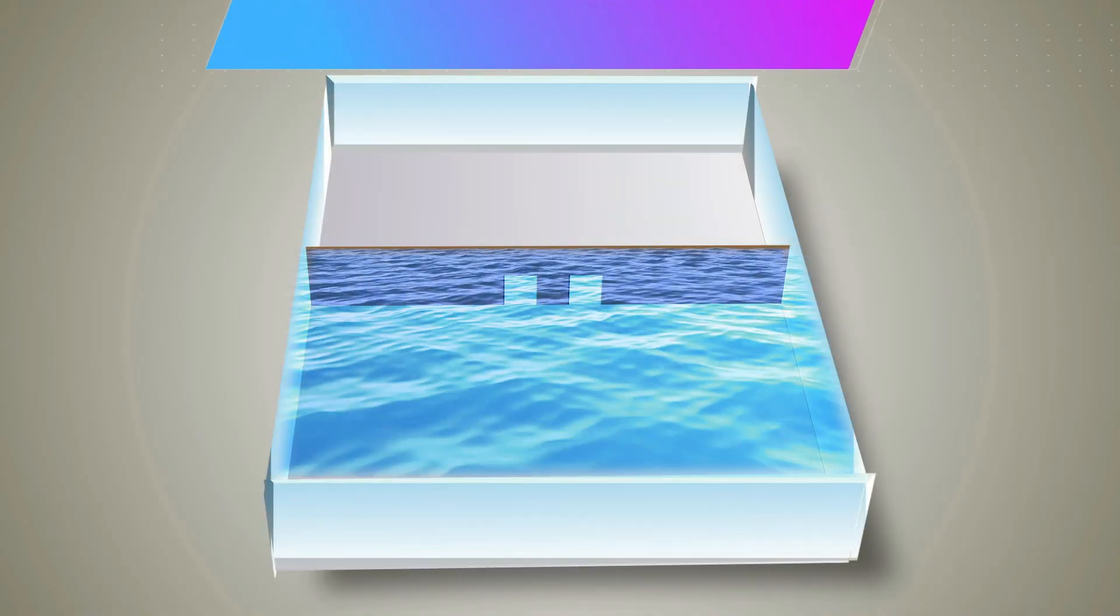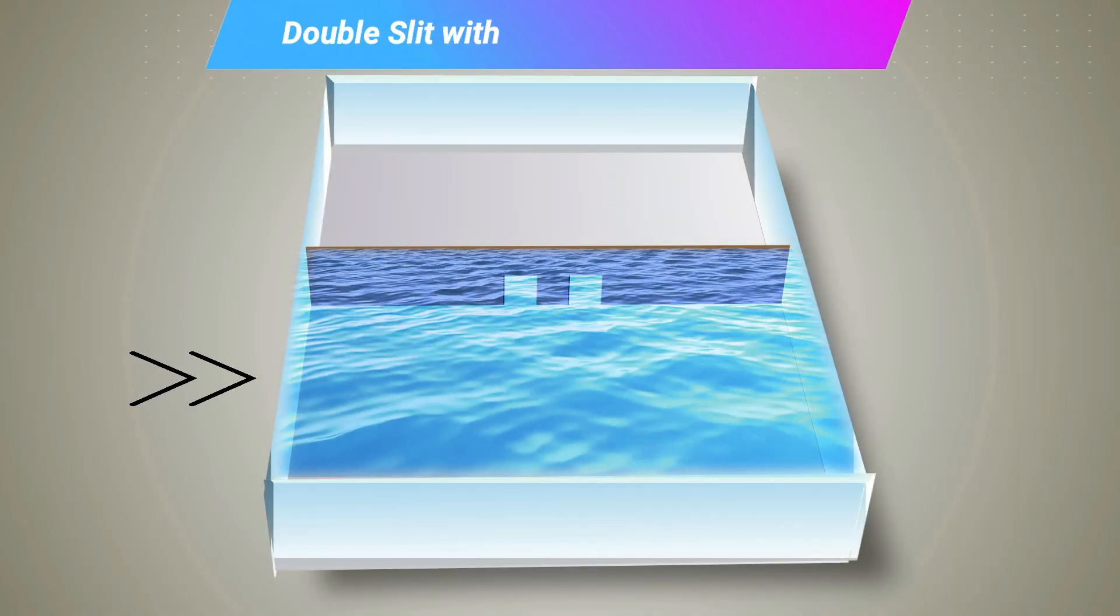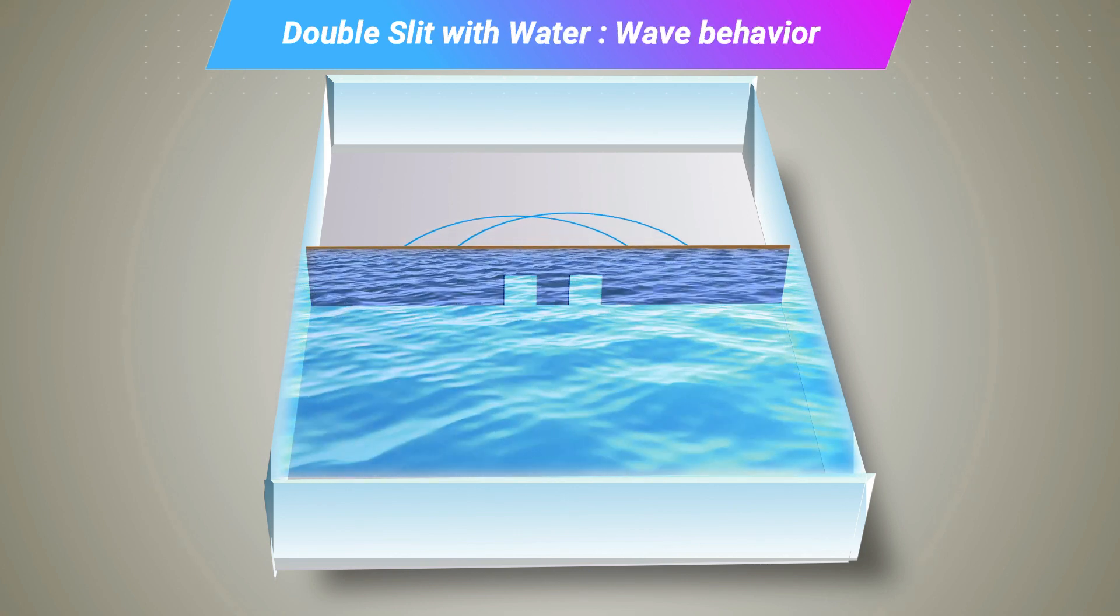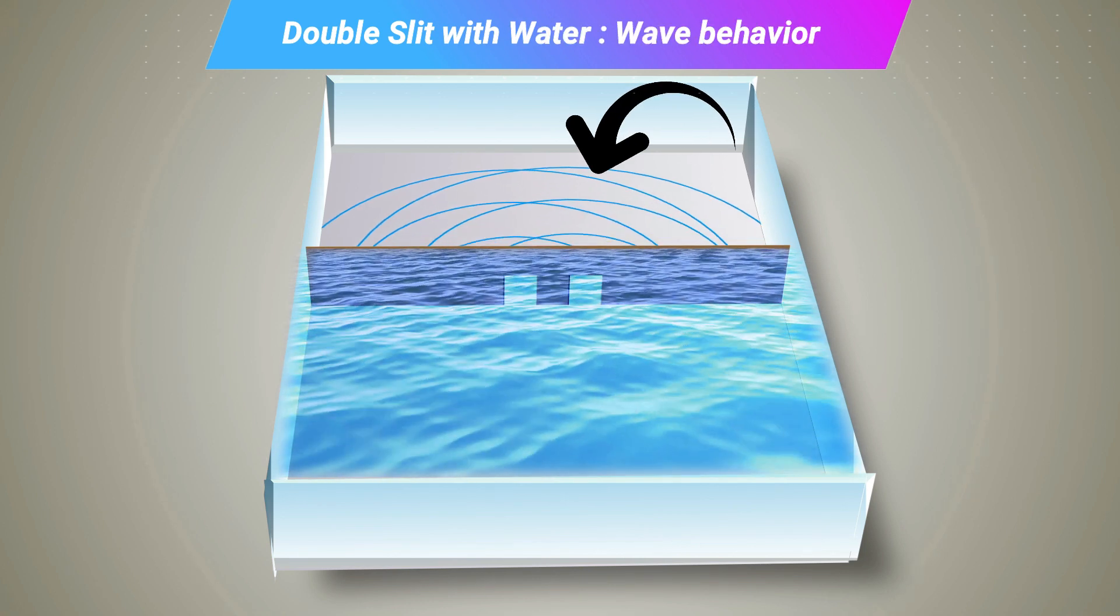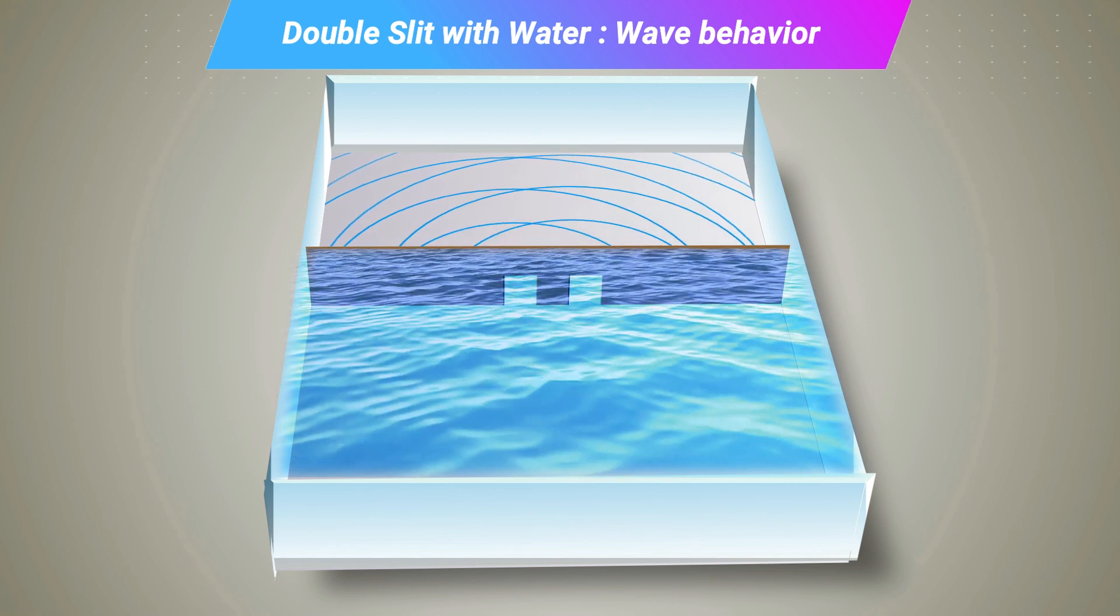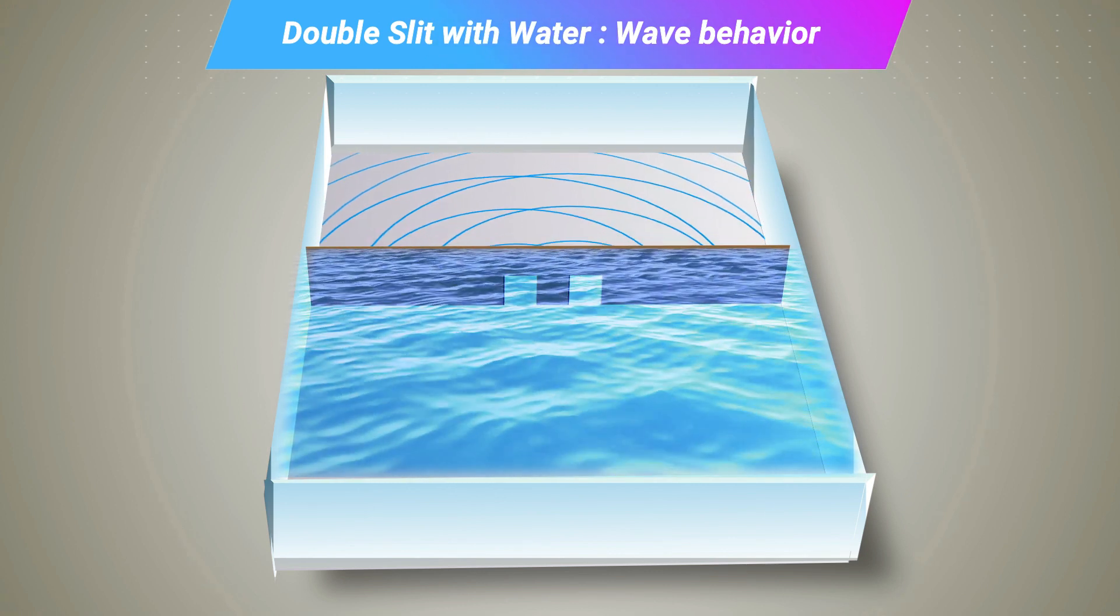Let's try to answer this question. First, consider this water trough. The waves will pass through both slits and interact, adding up in some places and nullifying each other in other places. Let's refer to this as wave behavior.